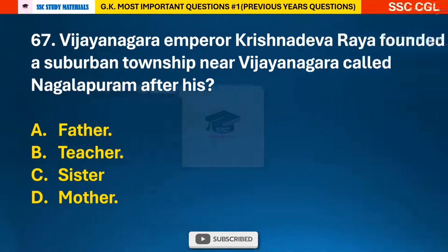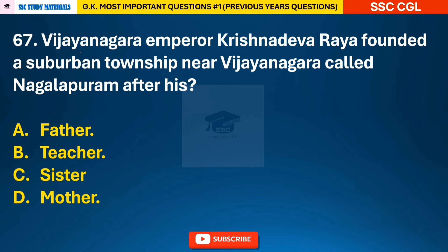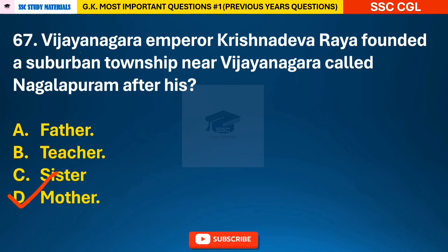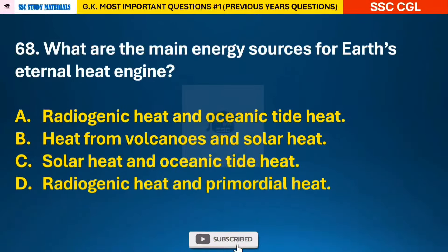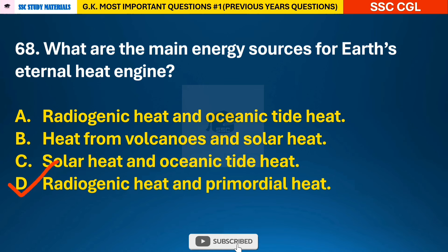Question 67: Vijayanagara Emperor Krishnadevaraya founded a suburban township near Vijayanagara called Nagalapuram after his — answer D: his mother. Question 68: What are the main energy sources for Earth's internal heat engine? — answer D: radiogenic heat and primordial heat.